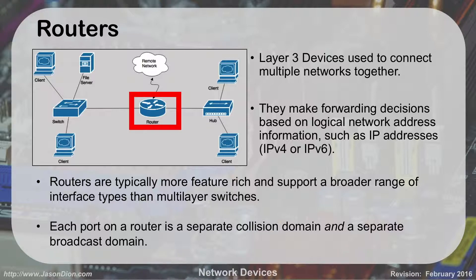We'll talk a lot about IP addresses later — there's an entire lesson dedicated to IPv4 and IPv6. Each port on the router is its own collision domain and its own broadcast domain. With a hub, everybody on the same hub is in one collision domain — when I speak, everybody hears me. With a router, every port becomes its own collision domain, breaking up those collision domains so we don't have collisions where traffic has to be rebroadcast and resent.